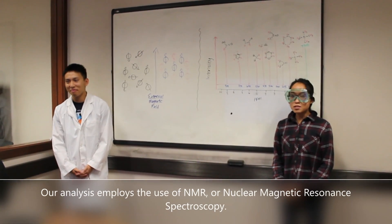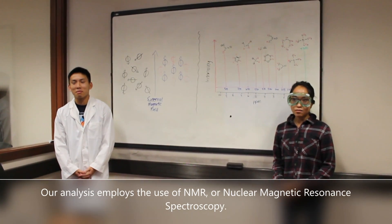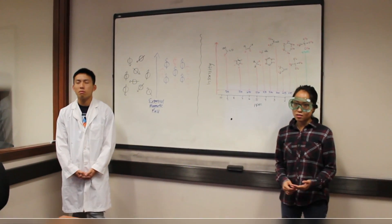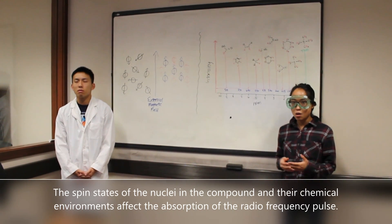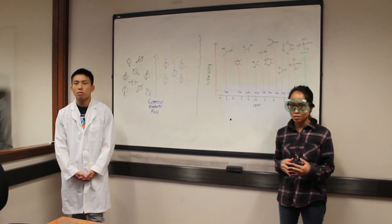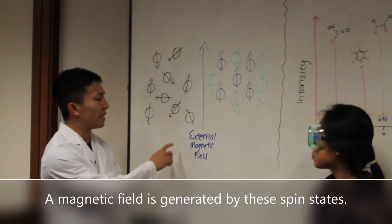The analysis employs the use of NMR or nuclear magnetic resonance spectroscopy. For this, the electromagnetic energy of radio frequency is used. The spin states of the nuclei in the compound and their chemical environments affect the absorption of the radio frequency pulse. A magnetic field is generated by these spin states.